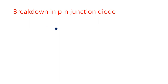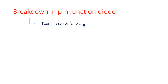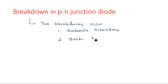Now coming to the breakdown of the PN junction diode. Breakdown means up to a certain voltage we can increase the applied voltage, but beyond that the junction breaks down, a large amount of current flows, and the circuit is simply damaged. There are two types of breakdown in the PN junction diode: one is avalanche breakdown and the second is Zener breakdown.